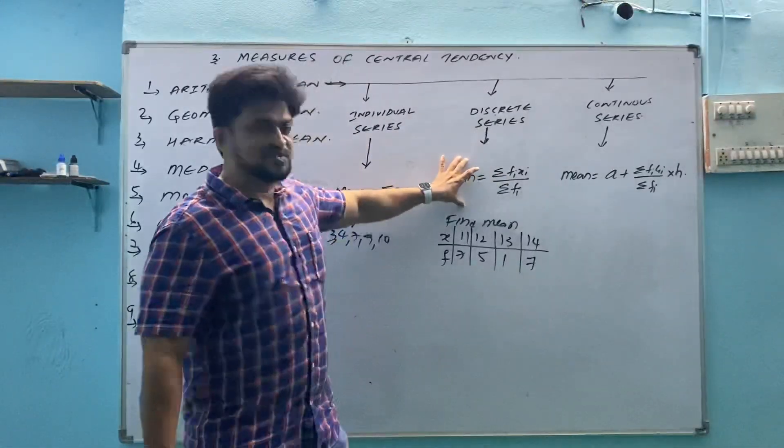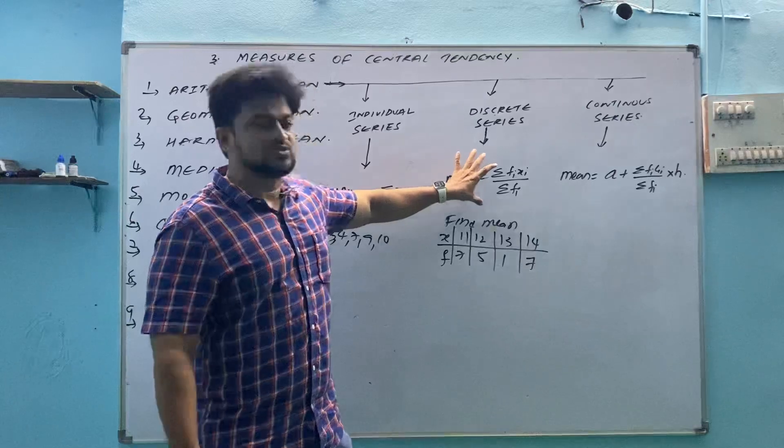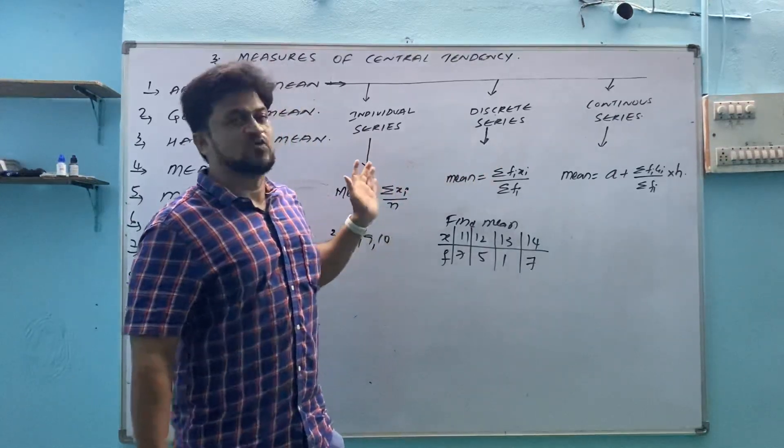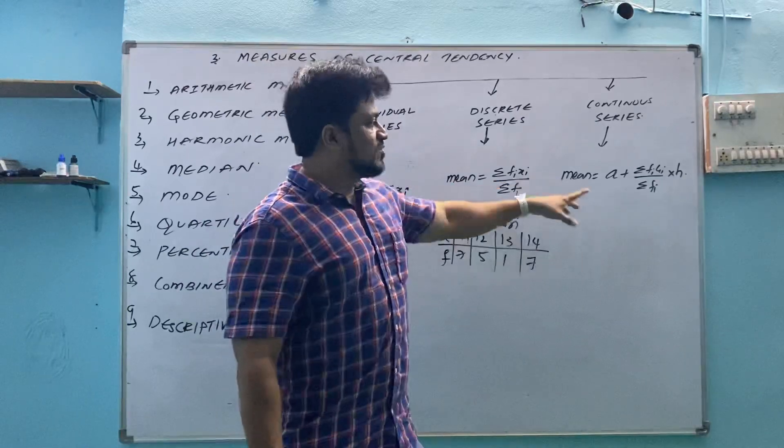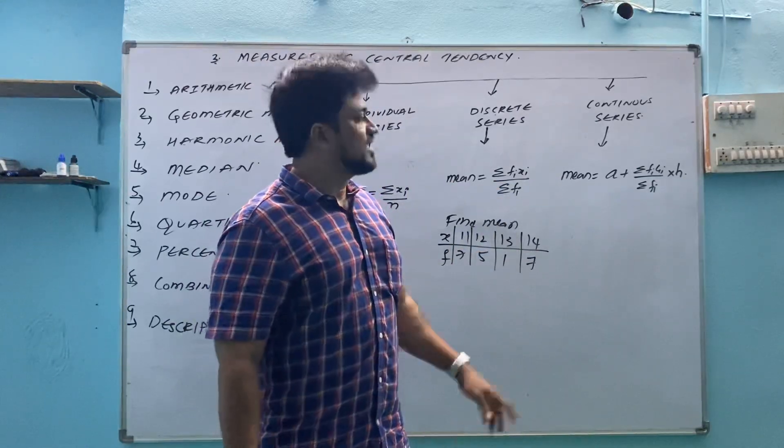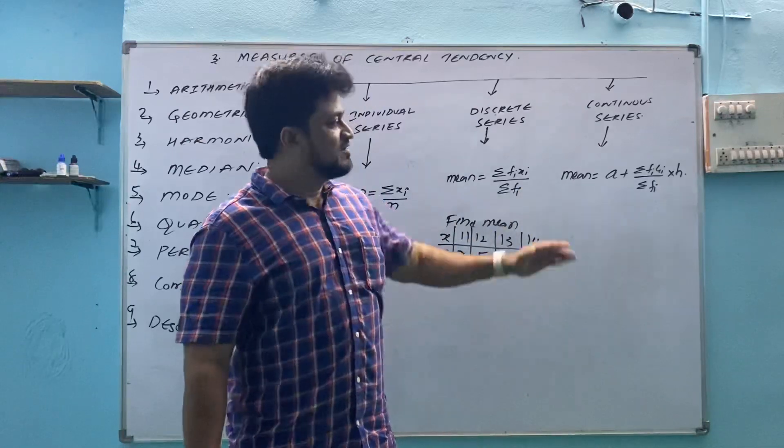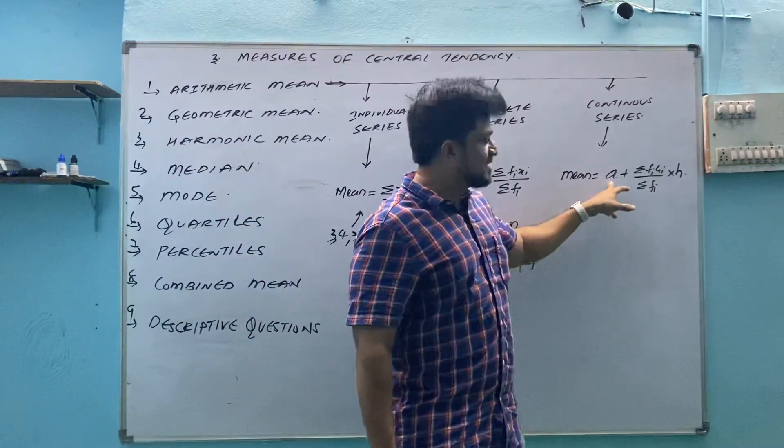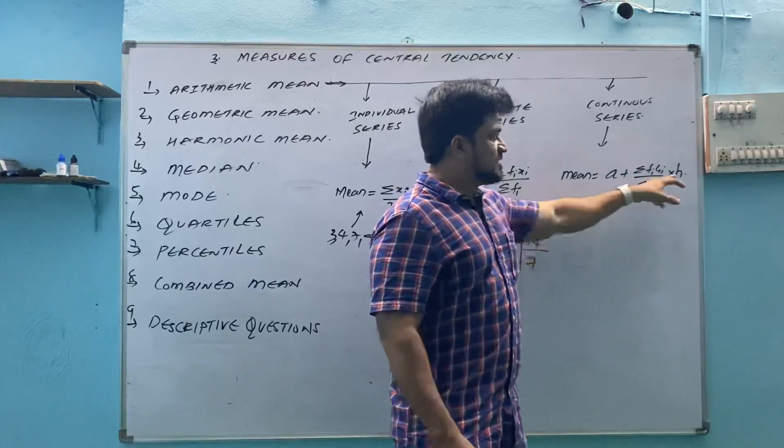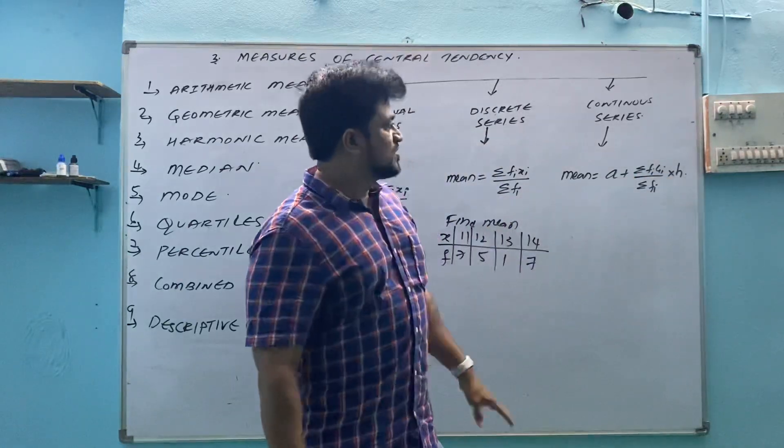Many methods are there. Discrete series also by using this method, or many formulas are there, we can use that also. But standard formulas, whatever we will use maximum, that I am writing here. Now, mean equals to a plus sigma fi into ui divided by sigma fi into h. This division is not for all. A is separate, plus then this value, then into h is given to you.